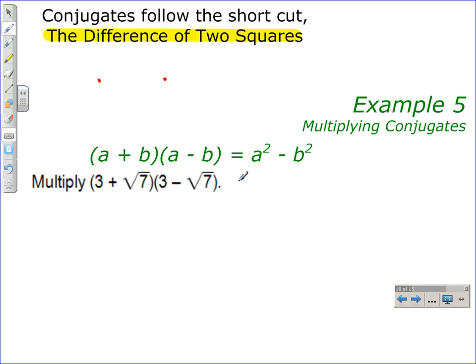To get the answer here, we have to square the first term, which would be 3, 3 squared, and then we have to square the second term, which is the square root of 7, and we will end up subtracting them.